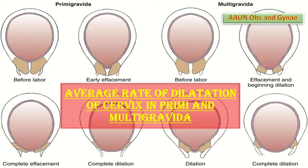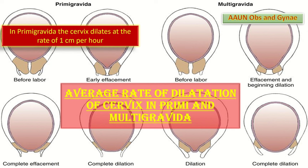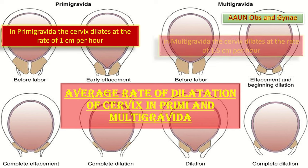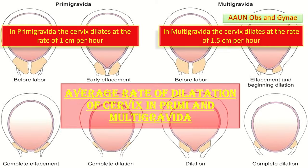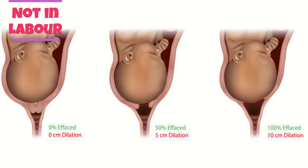The average rate of dilatation of the cervix differs between primigravida and multigravida. In a primigravida, the cervix dilates approximately one centimeter per hour, while in a multigravida, the cervix dilates at the rate of 1.5 centimeters per hour.